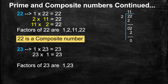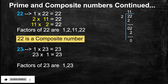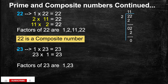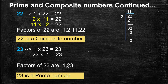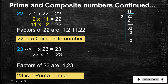Next, 23. We know 1 is a factor of every number, so 1s are 23, 23. 23 is not a multiple of 2 because the ones place is not an even number. Checking further, 23 has no other factors. So 23 is a prime number.